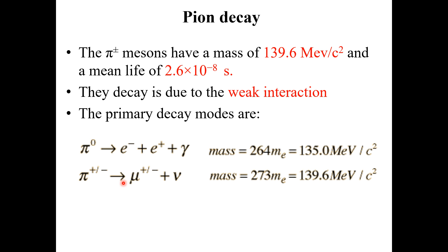Similarly, if we write the decay process for the charged pions, the charged pions decay into muons plus neutrinos. Their mass is equal to 273 times the mass of the electron, which in energy units is equal to 139.6 MeV/c².